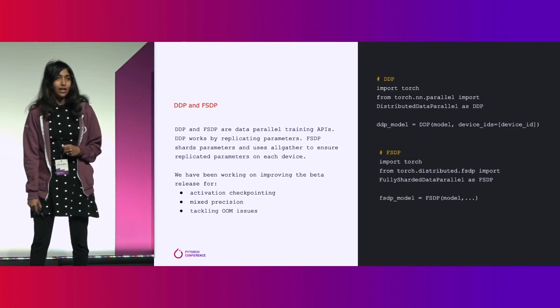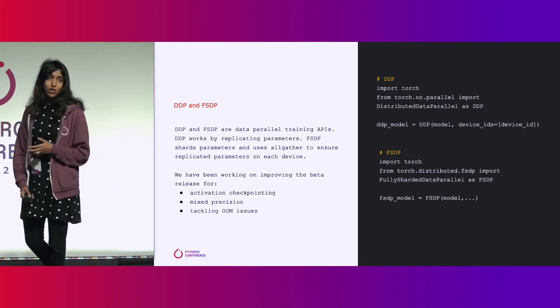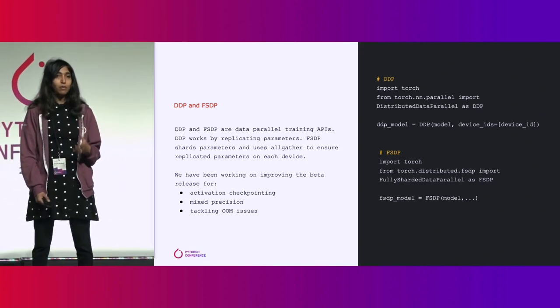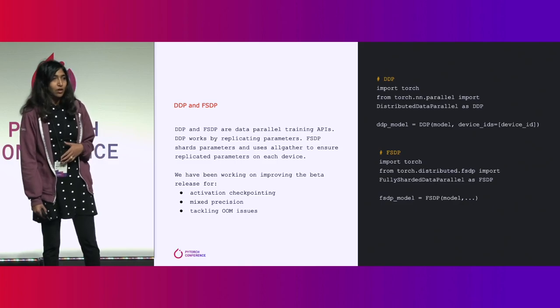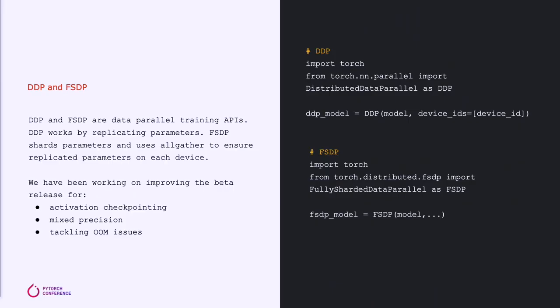Let's take a look at DDP and FSDP, which is how we've implemented data parallelism. Most folks might be familiar with DDP, where we replicate parameters on different devices and enable gradient synchronization using all-reduce so that params are in sync. FSDP also implements data parallelism, but here you shard parameters on different devices and you use all-gather before you have the forward pass of the enabled module.